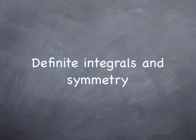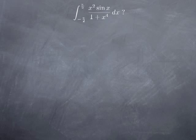To finish this module, we're going to look at some special properties of integrals when we're integrating certain kinds of functions over an interval that is centered at the origin. For instance, we have to find the definite integral of x squared times sin x divided by 1 plus x to the fourth, over the interval from negative pi over 2 to pi over 2.